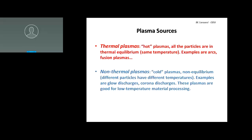We can make thermal plasma and non-thermal plasma. Thermal plasma — hot plasma — is where all the particles are at the same temperature or energy, in thermal equilibrium. Examples are welding arcs and nuclear fusion plasmas. Non-thermal plasmas, which I call low-temperature plasma, are non-equilibrium: the electrons are energetic but the ions and neutrals are cold, so you can touch them without getting burned. Examples are glow discharges, and they're good for material processing since they don't burn what they touch.